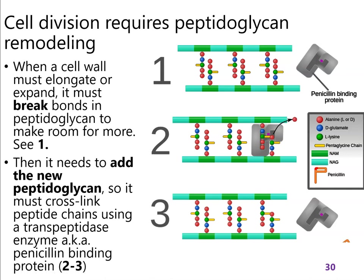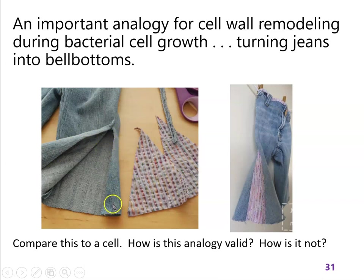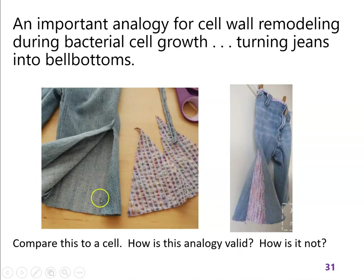If you're trying to envision this, think about making bell-bottom pants. If you want huge ankles, you cut the fabric and add a big piece and sew it in so it becomes part of the fabric. That's what the cell has to do — cut the peptidoglycan, add new peptidoglycan, and bond it in to make the cell bigger.